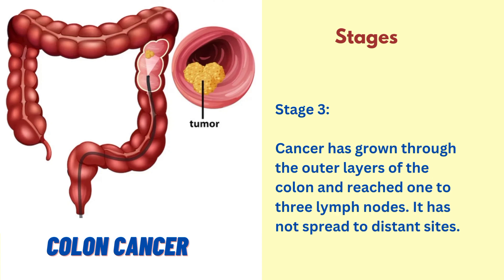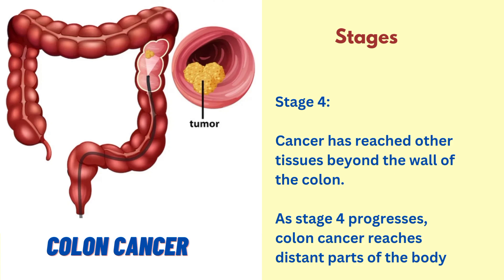Stage 3, cancer has grown through the outer layers of the colon and reached 1 to 3 lymph nodes. It has not spread to distant sites. Stage 4, cancer has reached other tissues beyond the wall of the colon. As stage 4 progresses, colon cancer reaches distant parts of the body.